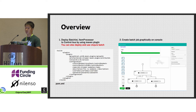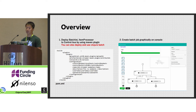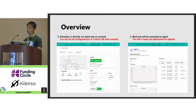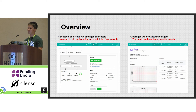Let's look at how JobStreamer changes batch job management. First, in order to use JobStreamer, you implement batchlets and item processors in Java and deploy them to JobStreamer — it's the same process as before, but you can do it via Maven plugin. And if you want, you can also deploy and use ClojureBatch. Second, you can create batch job definitions graphically in the console. Next, you can schedule batch jobs on the console directly, or manually execute them on the console. You can do all configurations of batch jobs from the console. And finally, batch jobs are executed on agents. The best advantage of JobStreamer is that you don't need any deployment to agents.